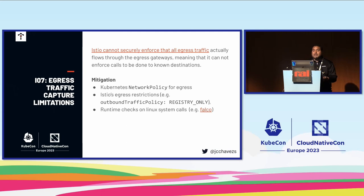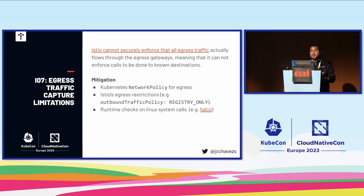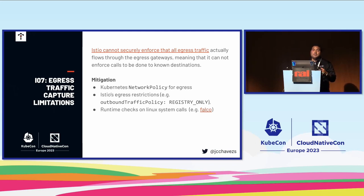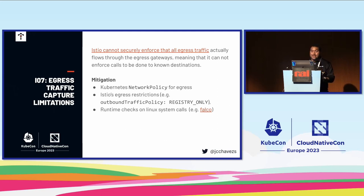Seventh is egress traffic capture limitation. Istio cannot securely enforce all traffic going through the sidecar or egress gateway — technically you could get into a pod and reach external URLs. Mitigations include network policy for egress, egress restrictions using outbound traffic policy to only allow known services in your registry, or setting up alerts on Linux syscall events using tools like Falco. A common attack is getting into a pod, installing curl, and then making requests — Falco monitors system calls and alerts you when someone installs curl or makes external requests from a pod.